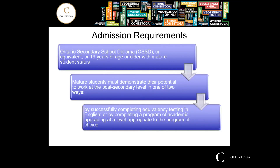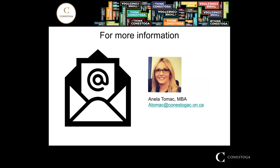What are the admission requirements? Because this program is designed to be a pathway, there are really just two: either an Ontario Secondary School Diploma or equivalent, or 19 years of age or older with mature student status. We do a lot of preparing you for further study in this program, so even if somebody left high school for whatever reason, this program will be sufficient to get them to a point where they would be eligible for entry into some of the more advanced programs at the college.